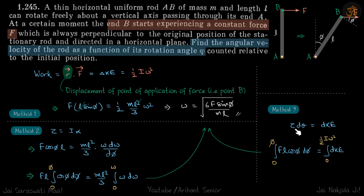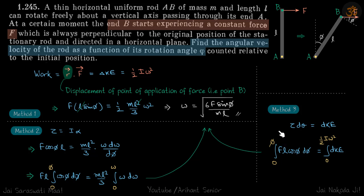Third method: again using work, but with a small differential amount. A small amount of work due to a torque is tau dθ, which equals a small change in kinetic energy. Here tau is F cos Phi times L, so F L cos Phi dΦ equals dKE, where kinetic energy goes from 0 to half I omega squared. Integrating both sides gives the same answer. All three are extremely good methods.